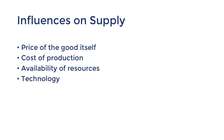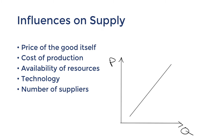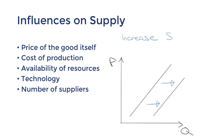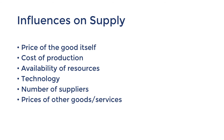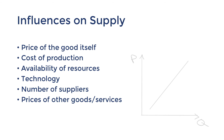Our next influence is the number of suppliers. With more producers of the good, the market can offer a higher quantity, and they often compete with lower prices too — shifting the curve to the right. The price of alternative goods and services will also influence supply. Imagine if you were a red apple farmer: if consumers started offering higher prices for green apples, you would shift resources to supplying green apples instead, so your supply of red apples would decrease.